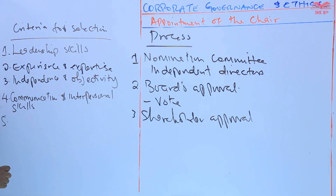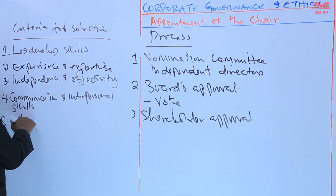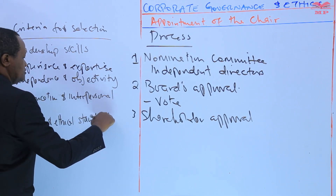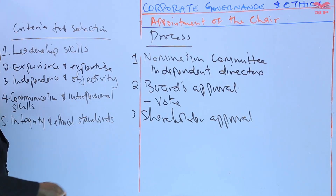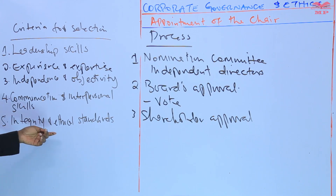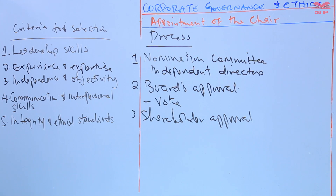Five: the criteria cannot be completed without integrity and ethical standards. The chair should demonstrate high ethical standards, serving as a role model for the board and for the company — a person who adheres to ethical standards. So these are five factors or criteria for selection that the nomination committee has to consider when selecting a chair.